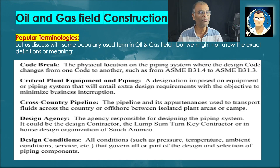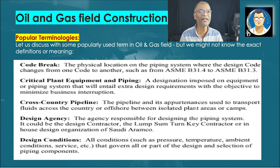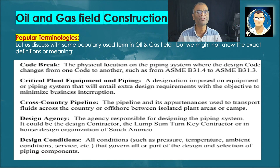Code break: let's say a pipeline coming from the desert or cross-country enters a plant area — there must be a code break. One code applies inside the plant for plant design, and another code applies for the pipeline up to that point. The physical location — specifically from which flange joint the code changes — is termed the code break. This term is used in ASME B31.4, B31.3, and B31.8.